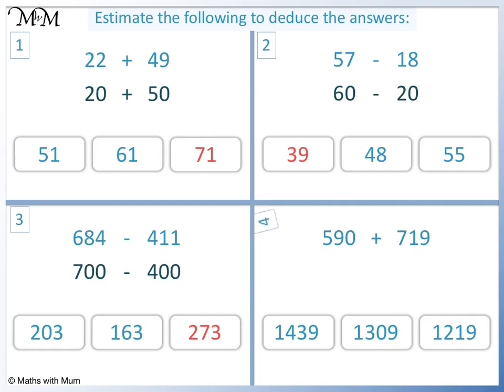Question 4. 590 rounds to 600 and 719 rounds to 700. 600 plus 700 equals 1300. The closest answer to 1300 is 1309.